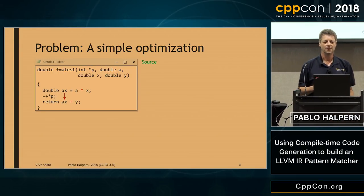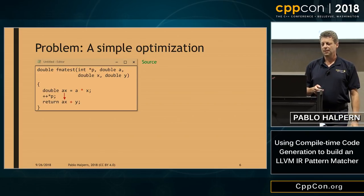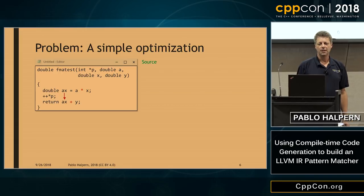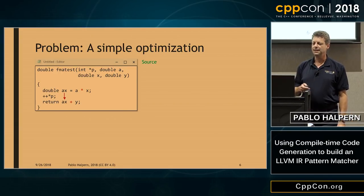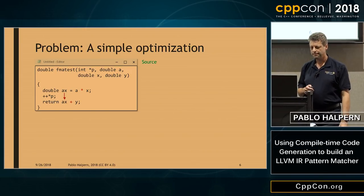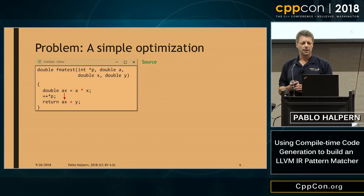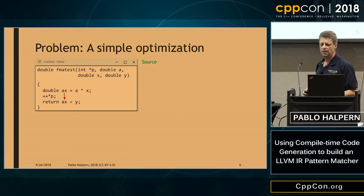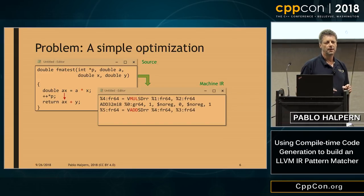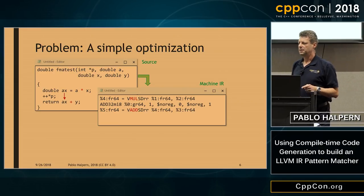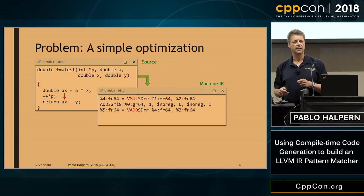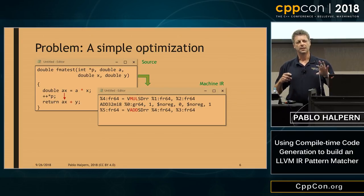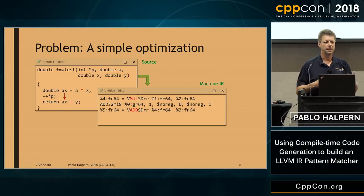Let me introduce the problem I needed to solve. This is a simple C or C++ program — a made-up example for this talk. We have a function that computes AX plus Y, and in the middle it also increments the value pointed to by P. The interesting thing is that the AX value computed at the beginning is used in the third line to compute the return value. When compiled by Clang, it produces this machine intermediate representation — x86 code still in LLVM format so LLVM tools can still be used on it.